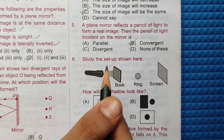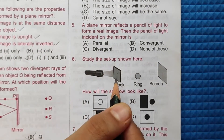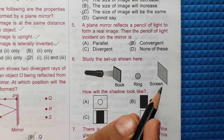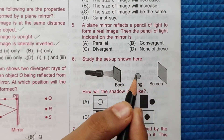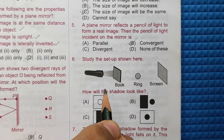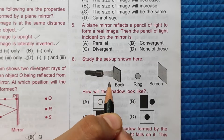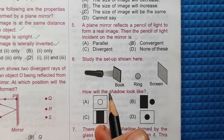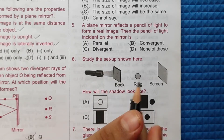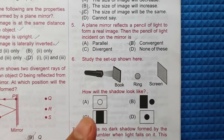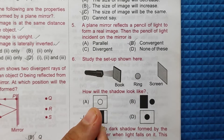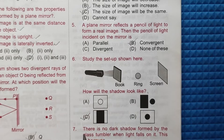Sixth question: study the setup shown. There is a book, then a ring, then a screen. The ring is much smaller than the book, so the book will cover up the ring. Therefore, in the shadow, the ring will not appear, and it will look like a plain shadow. The correct answer is option C.